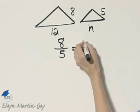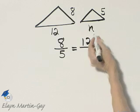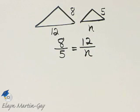as this triangle's length, 12, is to this corresponding side, N. And so we have a proportion.